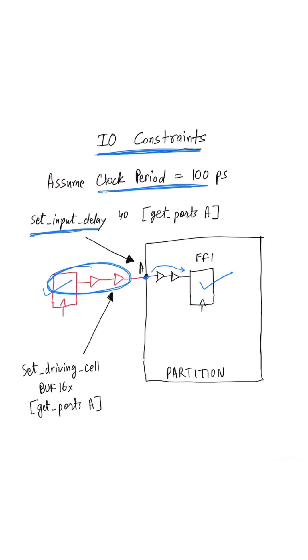By setting input delay to 40 at port A, we are specifying that 40 picoseconds of the clock cycle will be taken outside the partition. So we only have 60 picoseconds to satisfy the timing requirement from port A to FF1.